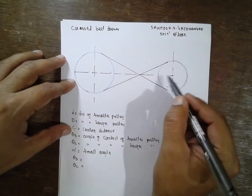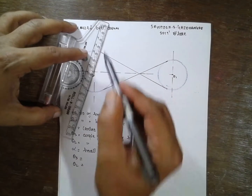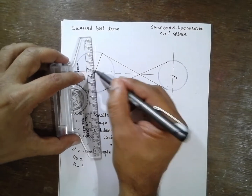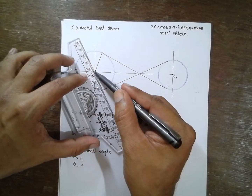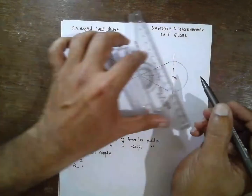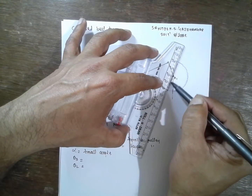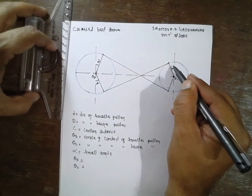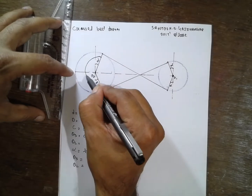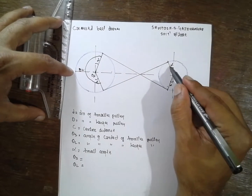Let us consider this is O1 and O2. It forms a smaller angle alpha, because the belt touches here. This angle is alpha here as well, and we call the larger angle of contact thetaL and the smaller one thetaS.